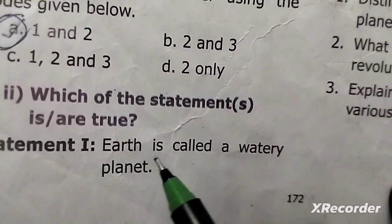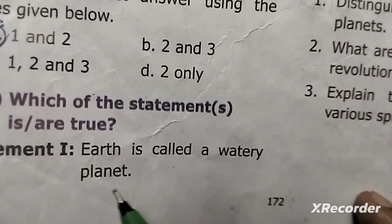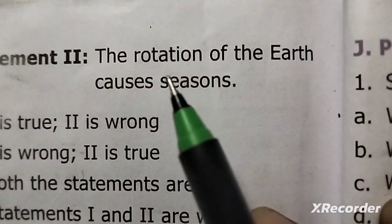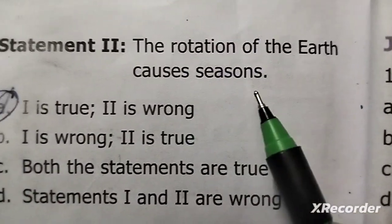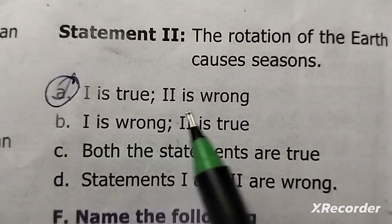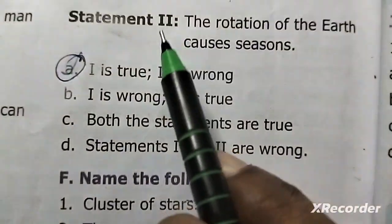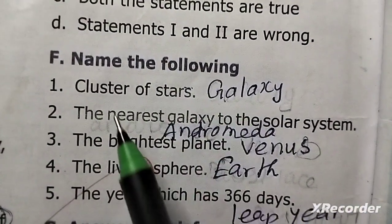Which of the statements is true? Statement 1: Earth is called the Watery Planet. Statement 2: the rotation of the Earth causes the seasons. First statement is true, second one is also correct. First one is true.